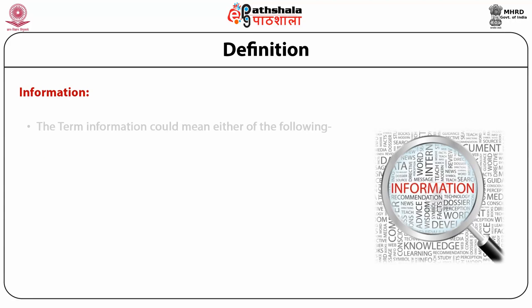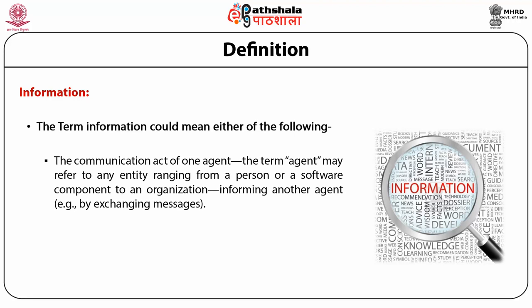Information can be seen from three perspectives: it could be data objects that represent knowledge or belief; it could be the knowledge or belief of an agent as part of their mental status; or it could be a communication act of one agent informing another, ranging from a person or software component to an organization.